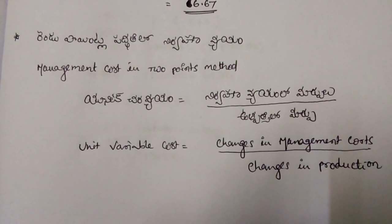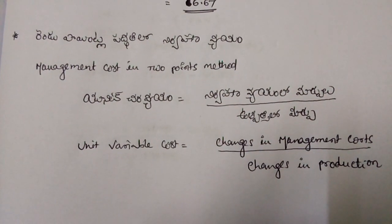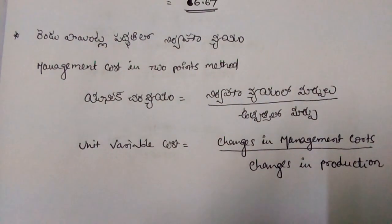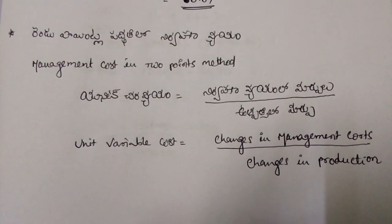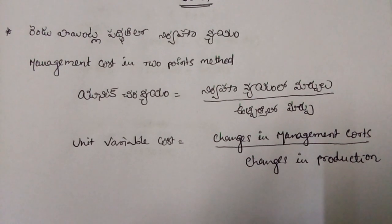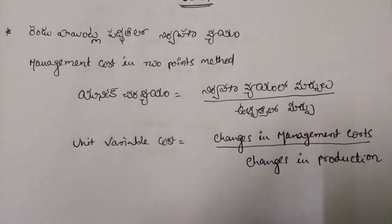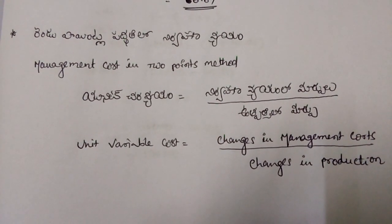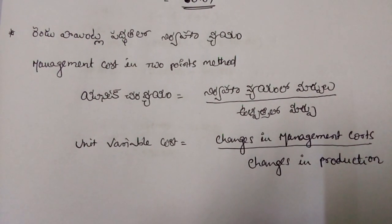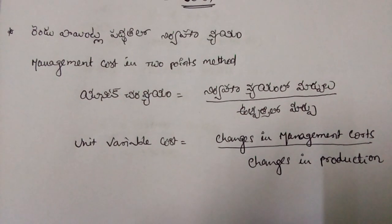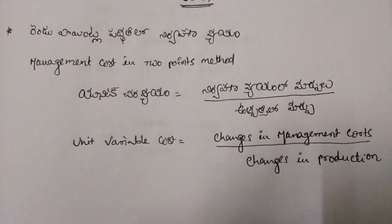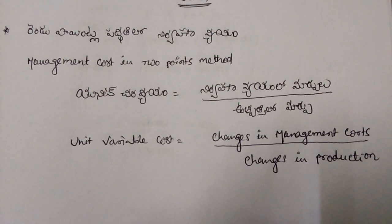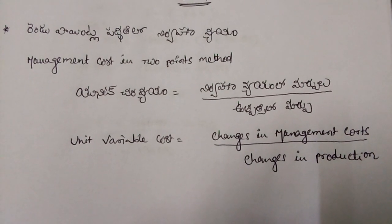2 Points method lo niruwhahana viyayam. Mare Viyayalu, Dhanik Soutra Meantran Diyaante, unit Variable Cost equals to Changes in Management Cost by Changes in Production.